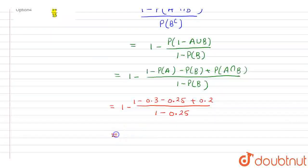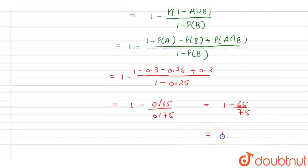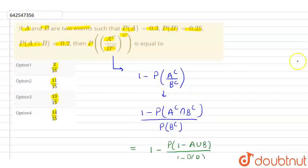Solving this, we get 1 minus 0.65 divided by 0.75. Cancelling the decimals, this becomes 1 minus 65/75, which simplifies to 1 minus 13/15. Taking the LCM, this equals (15 minus 13)/15, which is 2/15. So the answer is 2/15, and option one is the correct answer.